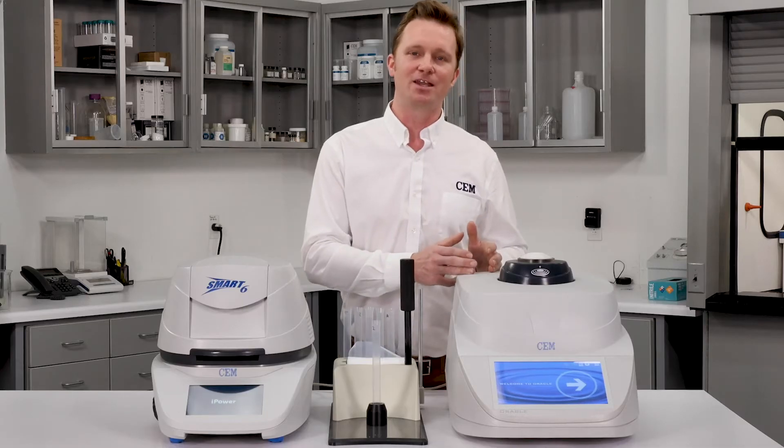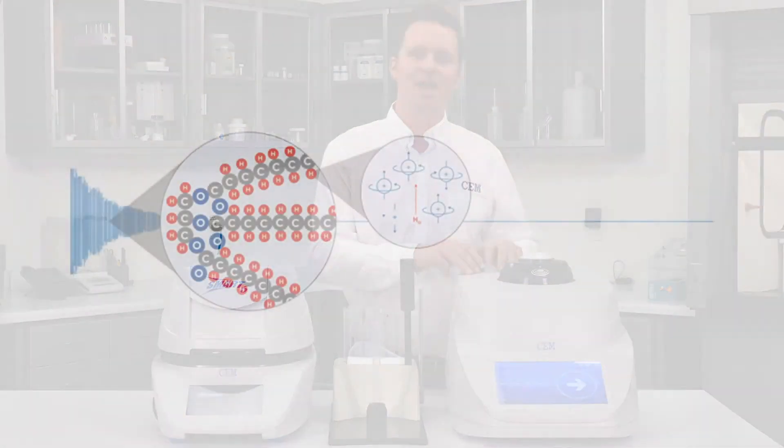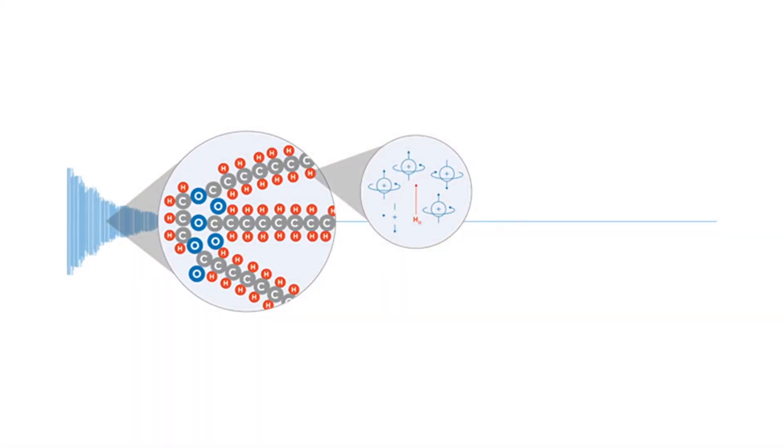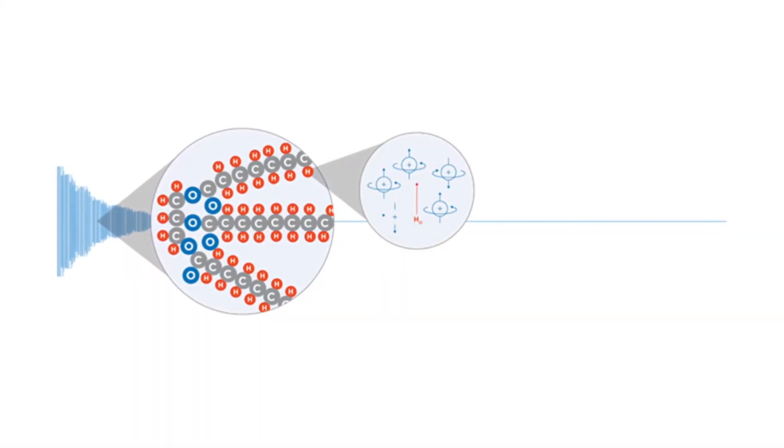Now let's talk about sample texture. FTIR and NIR are susceptible to changes in color, consistency, and texture because they are optical measurements — the way the sample looks can affect results. The Oracle, on the other hand, is looking at the molecular structure of the sample and is not affected by changes in color, texture, or consistency.